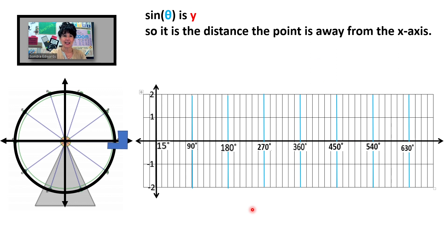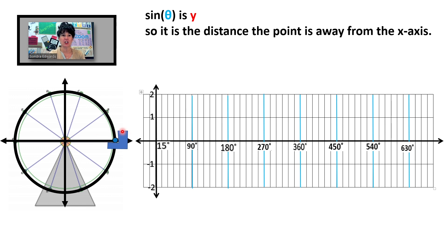The Ferris wheel will help us illustrate the graph of sine of theta. If we start the chair at angle 0, it's on the x-axis, so at 0 degrees we have a height of 0. The chair starts to move and is now at about 30 degrees — how far off the x-axis? About 0.5. So at 30 degrees we have 0.5.